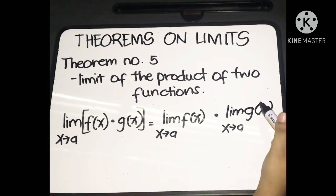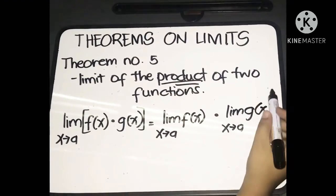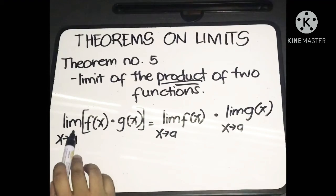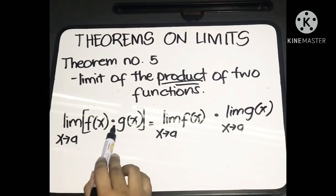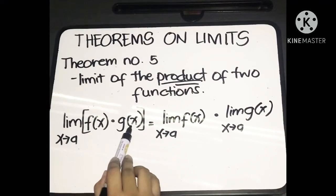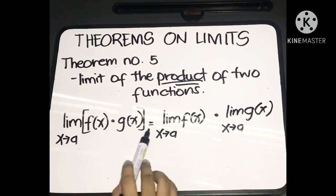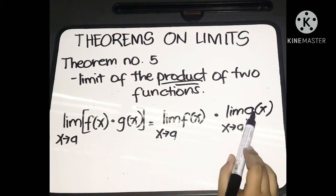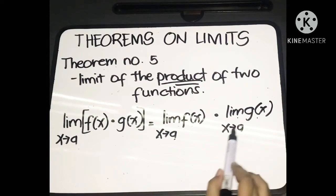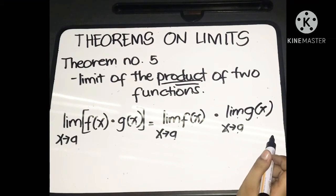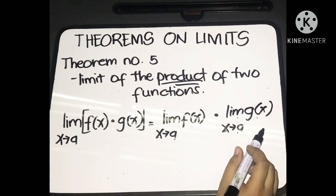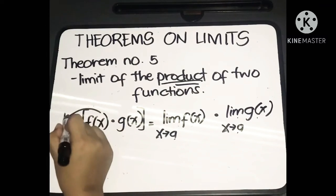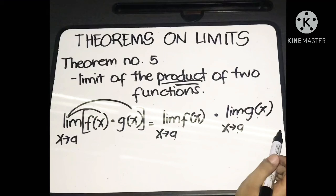Let's have the fifth theorem: the limit of the product of two functions. So we have the limit of f(x) multiplied by g(x) as x approaches a is equal to the limit of f(x) as x approaches a, multiplied by the limit of g(x) as x approaches a. You may notice that we just distribute the limit across multiplication.